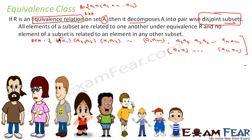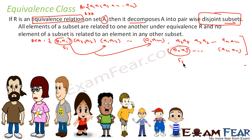It decomposes in such a fashion that all the subsets you get are disjoint sets. That means if an element is part of set 1, it won't be part of any other set. Any element can only belong to one subset, so they are all disjoint. That is how the decomposition works.